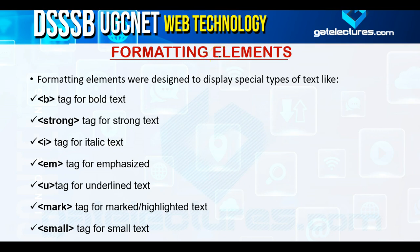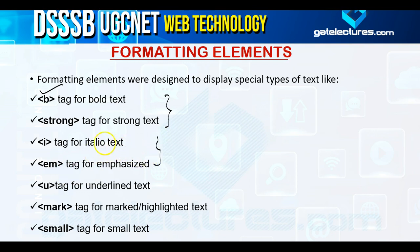Next are the formatting elements. In a word processor, you're familiar with bold, italic, and underline. Some of these are used in HTML as well. Formatting elements were designed to display special types of text. The bold tag works the same as in a word processor. The strong tag works basically the same as bold. The italic tag works the same as in a word processor. The emphasized tag works almost the same as italic. The underline tag is used for underlining text.